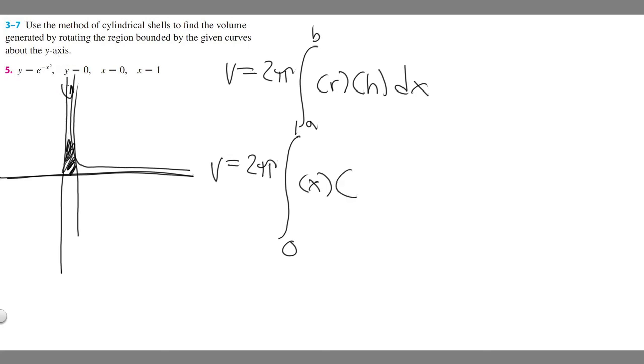Or well, you take your top curve minus the bottom one. So if y equals zero was above it over this interval, then it would be zero minus our curve. In this case, e to the minus x squared is above it throughout this interval, right? And you know that because if you plug in any number throughout this interval, zero to one, it's always going to be greater.